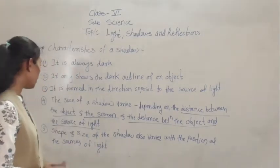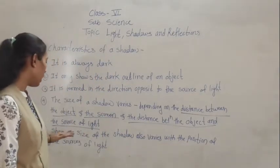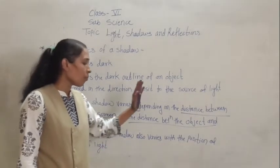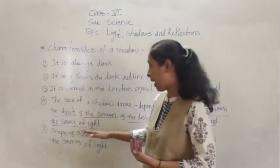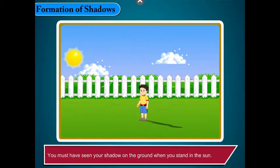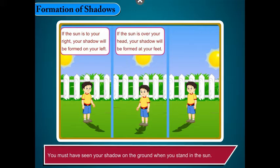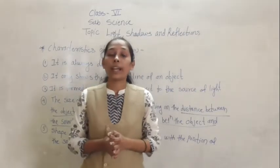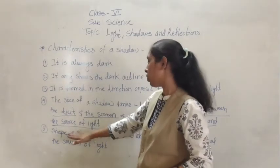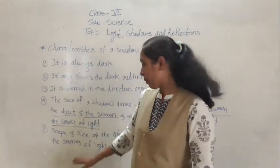The last characteristic of a shadow is that the shape and size of the shadow also varies with the position of the source of light. If you change the position of the source of light, the shadow can change its shape and size. You must have seen your shadow on the ground when you stand in the sun. If the sun is to your right, your shadow forms on your left. If the sun is over your head, your shadow forms at your feet. If the sun is to your left, your shadow forms on your right.